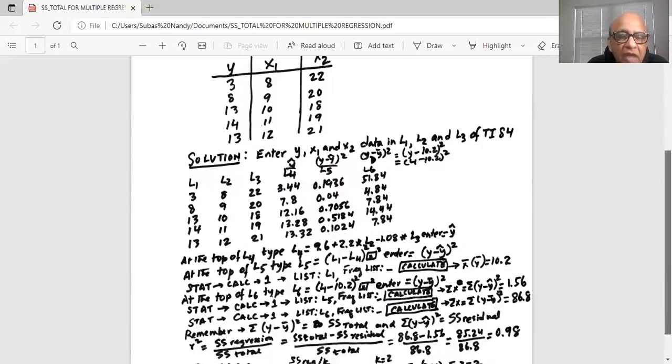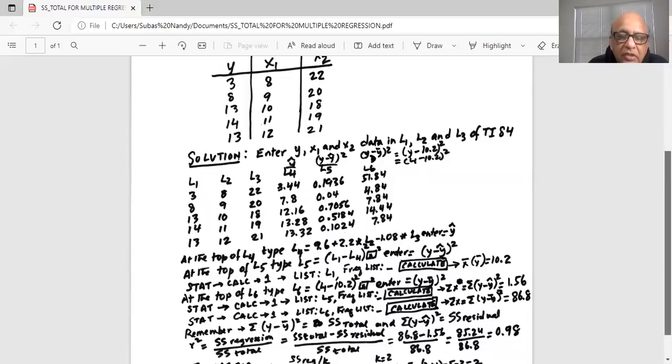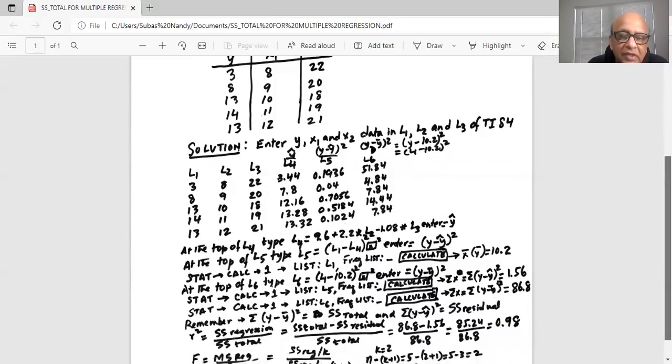Now we go to stat, calc 1, list is L5, frequency list empty, calculate. Remember L5 is filled up with y minus y hat square. So when we get the sum of x, it is sum of y minus y hat square, which is 1.56.